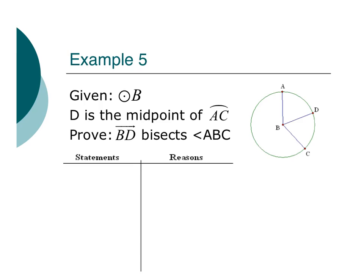So in this problem we have circle B. We have D as the midpoint of arc AC, and we want to prove that BD bisects angle ABC. Now if you think you want to try this one on your own, go for it. Press play when you're ready. Otherwise I'm going to hop right to it.